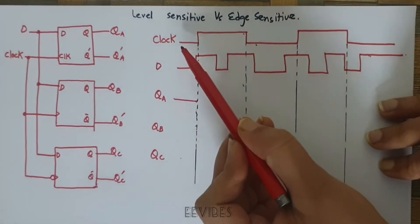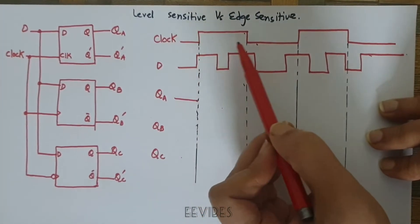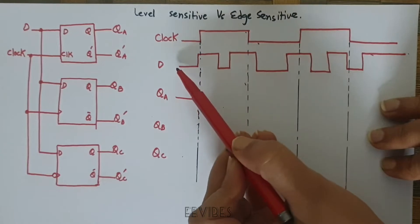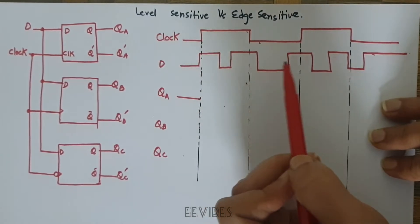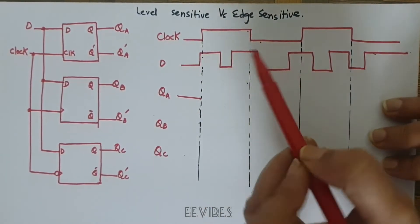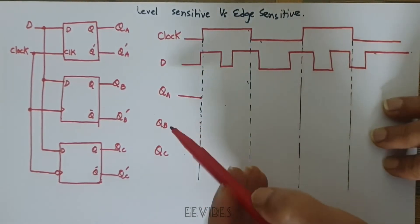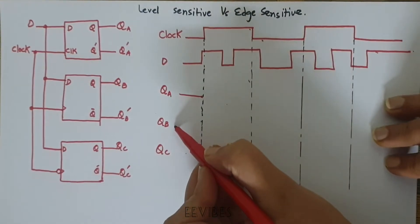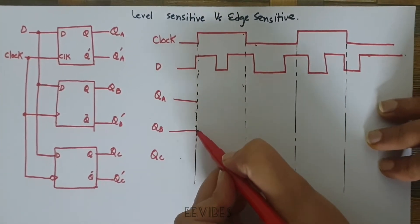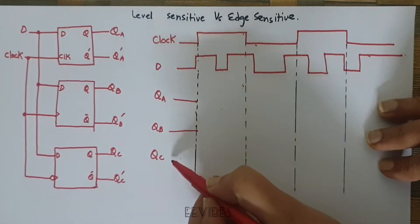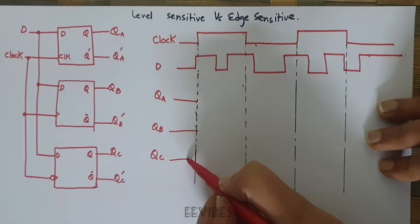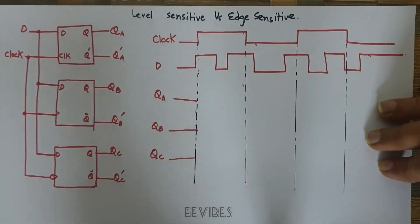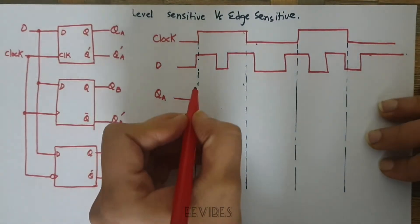I have drawn the clock input signal and the input signal D randomly. Initially, I will assume the output of all these elements is equal to 0.